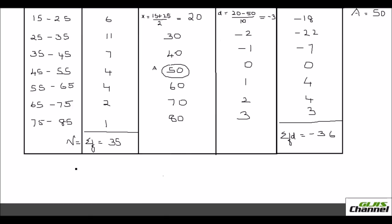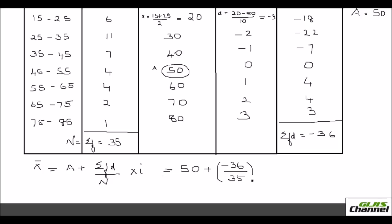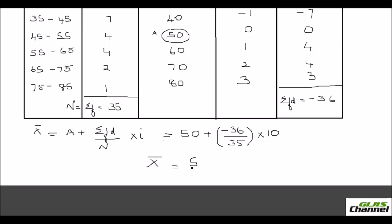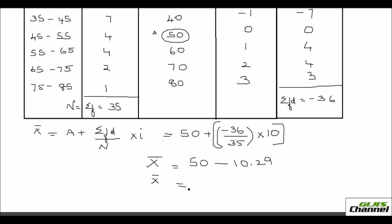Now let us do the calculation. The formula is x̄ = a + (Σfd / N) × i. So that is 50 + (−36 / 35) × 10. The assumed mean is 50. Calculating the fraction first: −36/35 × 10 = −10.29. Therefore, x̄ = 50 − 10.29 = 39.71.